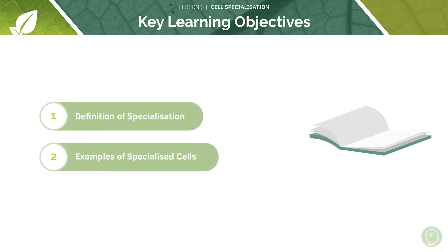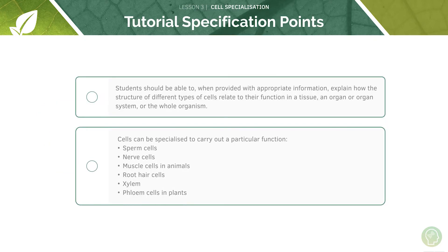Today your key learning objectives are to learn the definition of specialisation and examples of specialised cells. And these are your specification points.